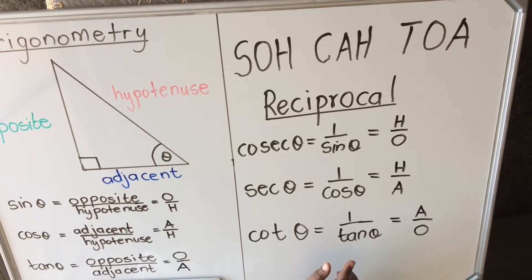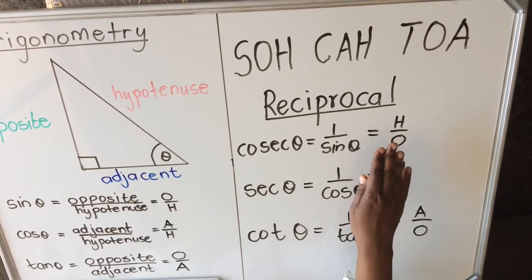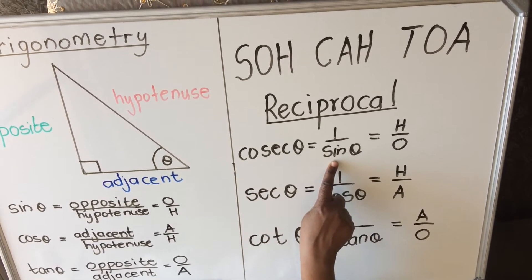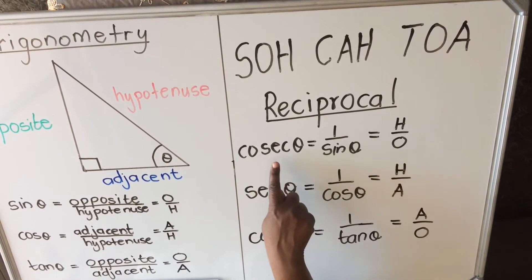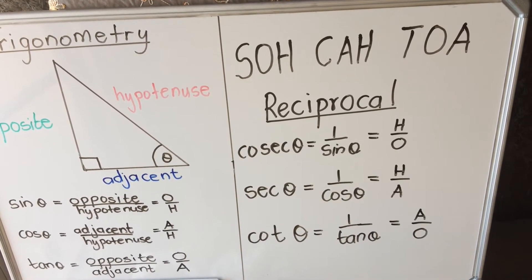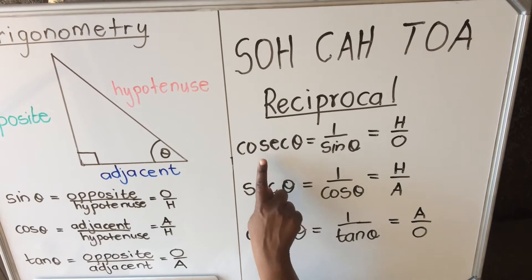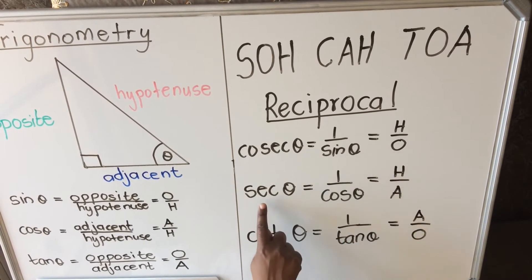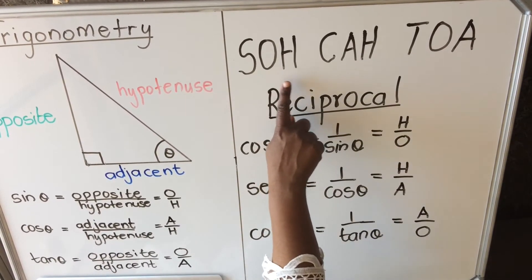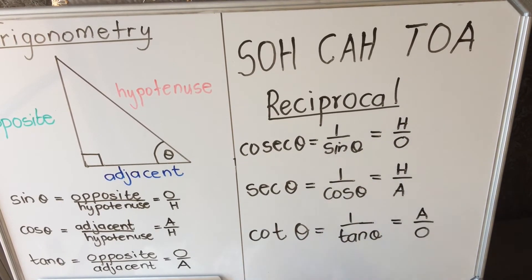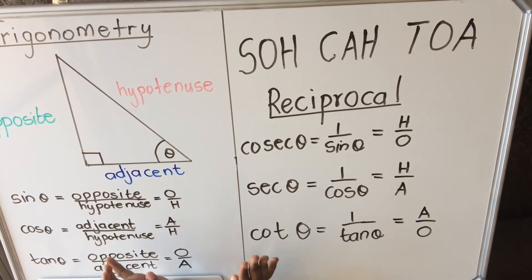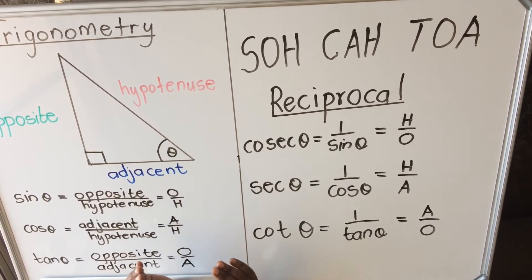For your exams, you don't have to memorize all the reciprocals separately. Just memorize that cosec goes with sine, sec goes with cos, and cot goes with tan. Then, once you know the original ratio from SOH-CAH-TOA, you simply swap it around to get the reciprocal. We learn trig ratios because we use them to find unknown sides and angles.